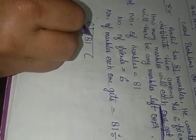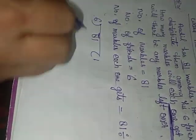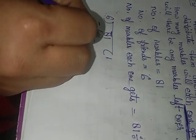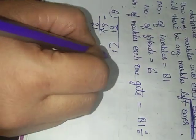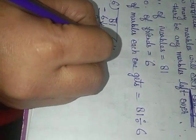6 into 1 is 6. 8 minus 6 is 2. Now 2 is less than 6, so take 1 here. Now 21, read the table of 6: 6 times 1 is 6, 6 times 2 is 12, 6 times 3 is 18. 6 times 3 is 24, which is more than 21, so we will take 18.